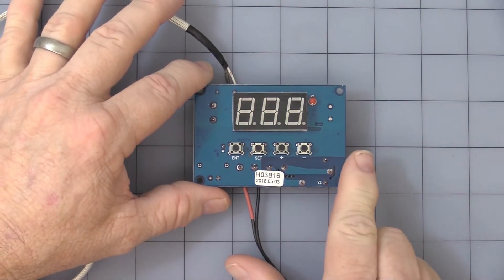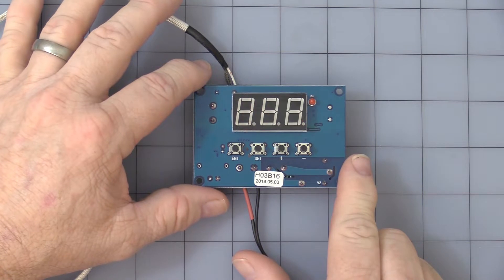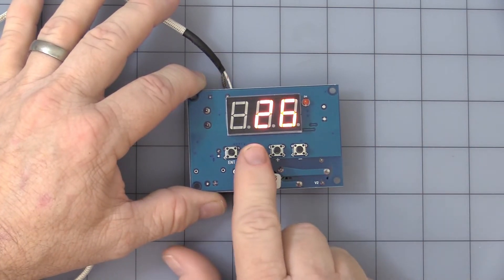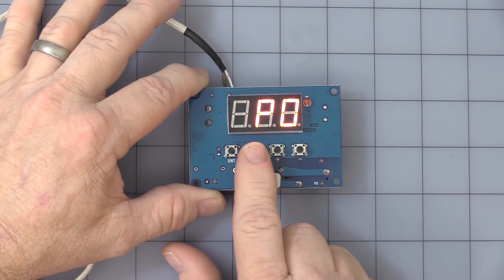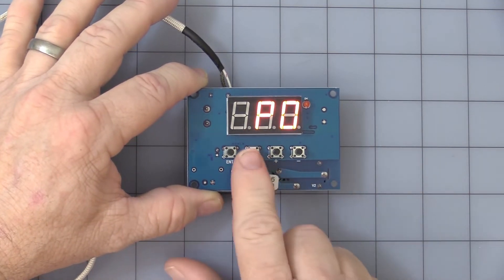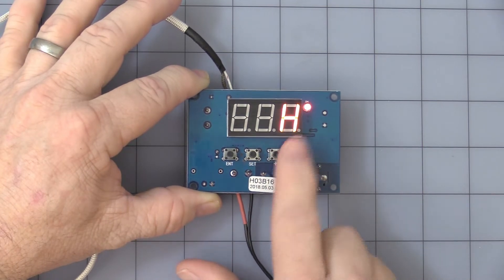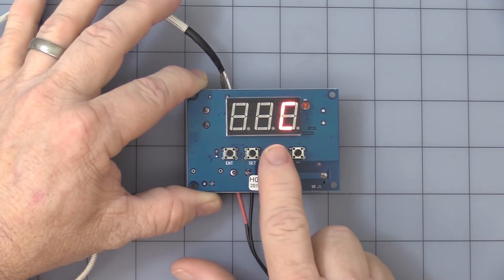Now that's the set point. Now it can be used for heating or cooling. I'll show you how to get into programming of that. On the set button, you press and hold, and it says P0. Hit set again, and you see it's C for cooling, H for heat, back and forth.